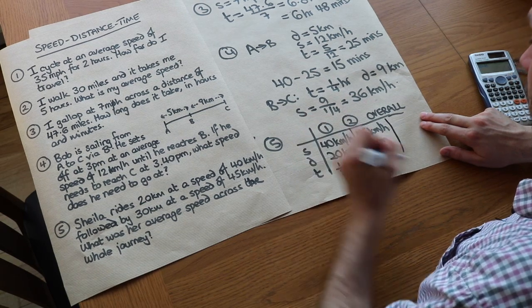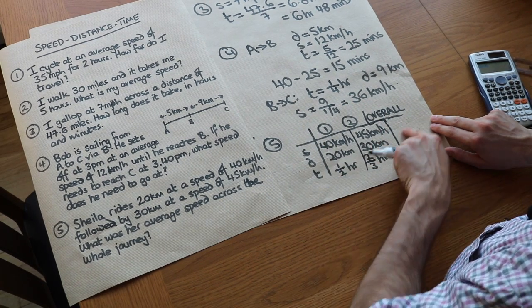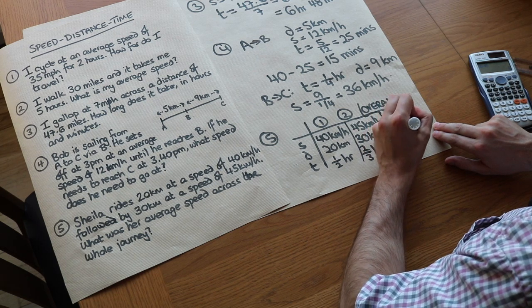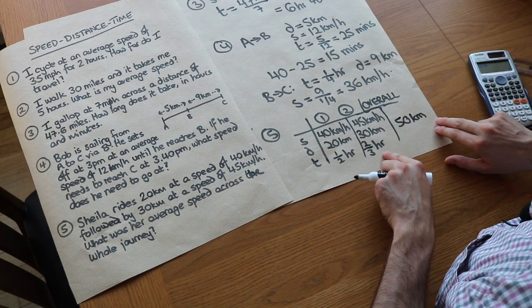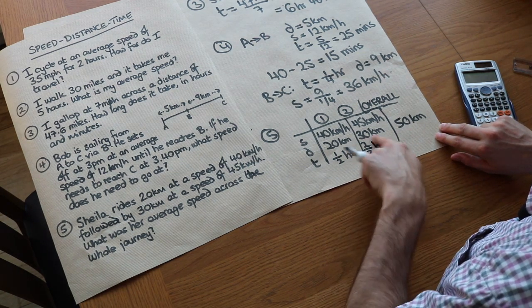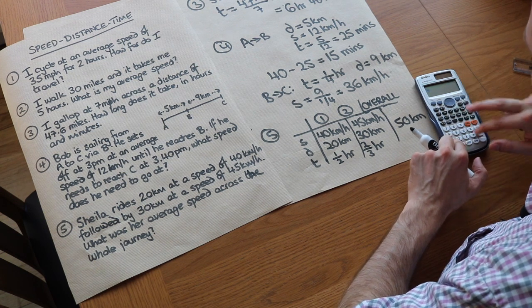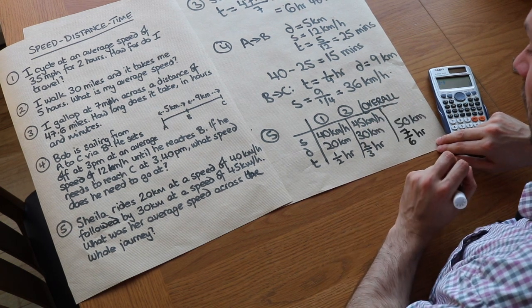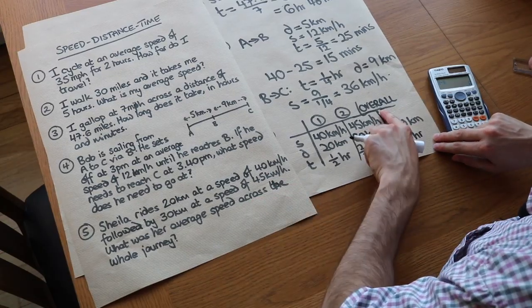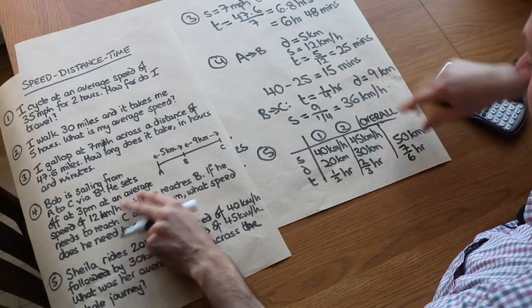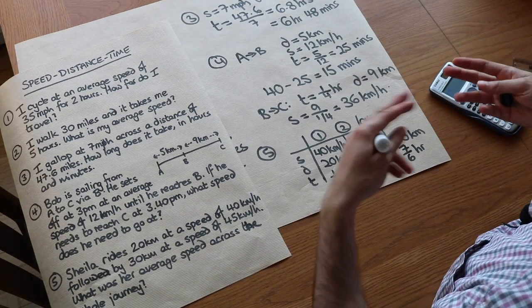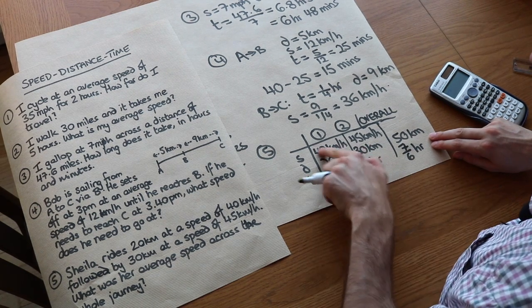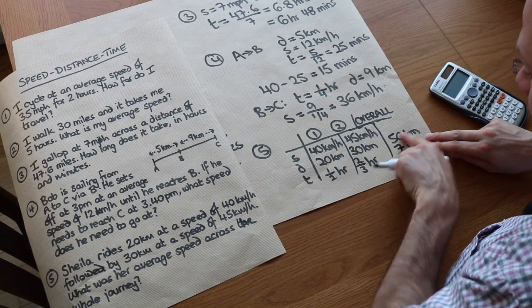Now let's consider our overall information. You can add the distances because the total distance is just the distance on the first leg plus the distance from the second leg. So we know overall we've got a distance of 50 kilometres. We can also add the times because the overall time is the time from the first leg plus the time from the second leg. If we do half plus two thirds, that gives us seven sixths of an hour, one and a sixth hours. Now we want to find the speed. Speed from this formula is distance over time, so we use the overall distance over the overall time. By the way, speed is the only thing you can't add. You can add the times to get the overall time, but it doesn't make sense to add the speed from the two parts of the journey.